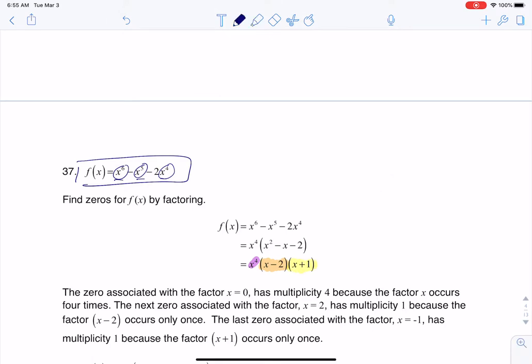So if I want to look at the exponents on each of these, I have a 4, I have a 1, and I have a 1. And if I set each factor to 0,